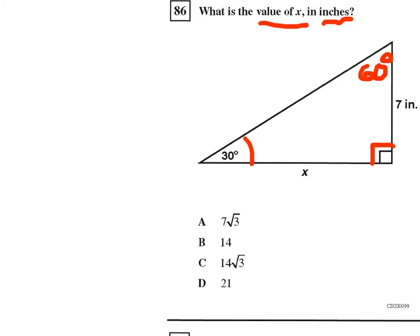The ratios that we're familiar with is 2x on the hypotenuse side, x times the square root of 3 on the side opposite to the 60 degree angle,